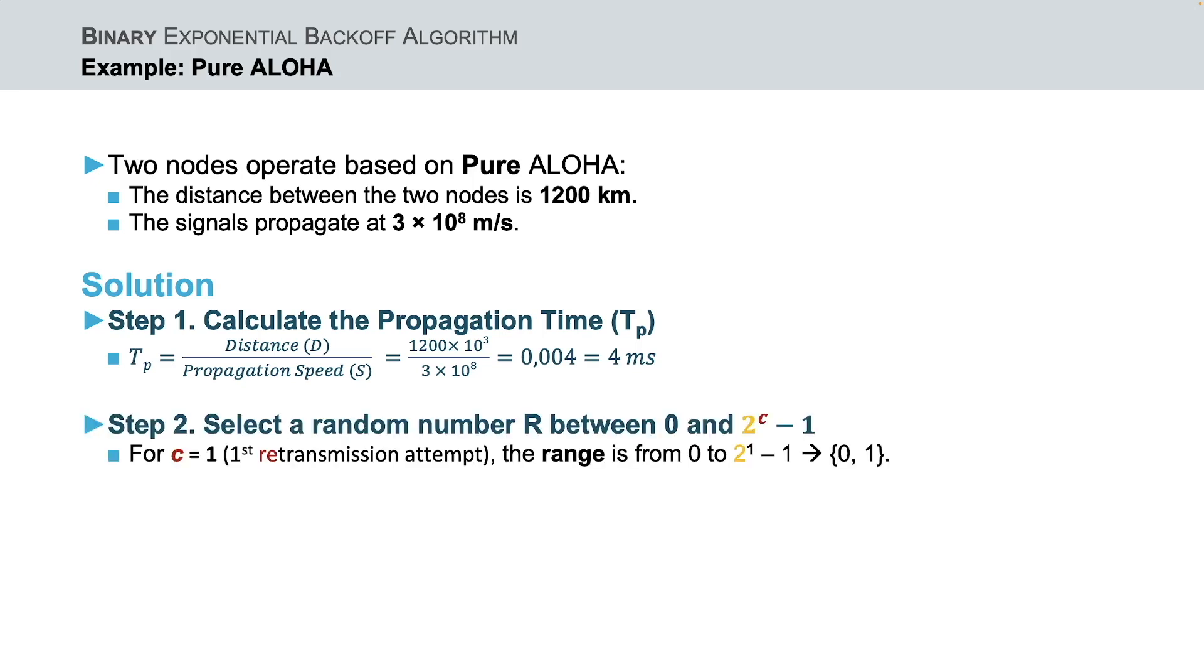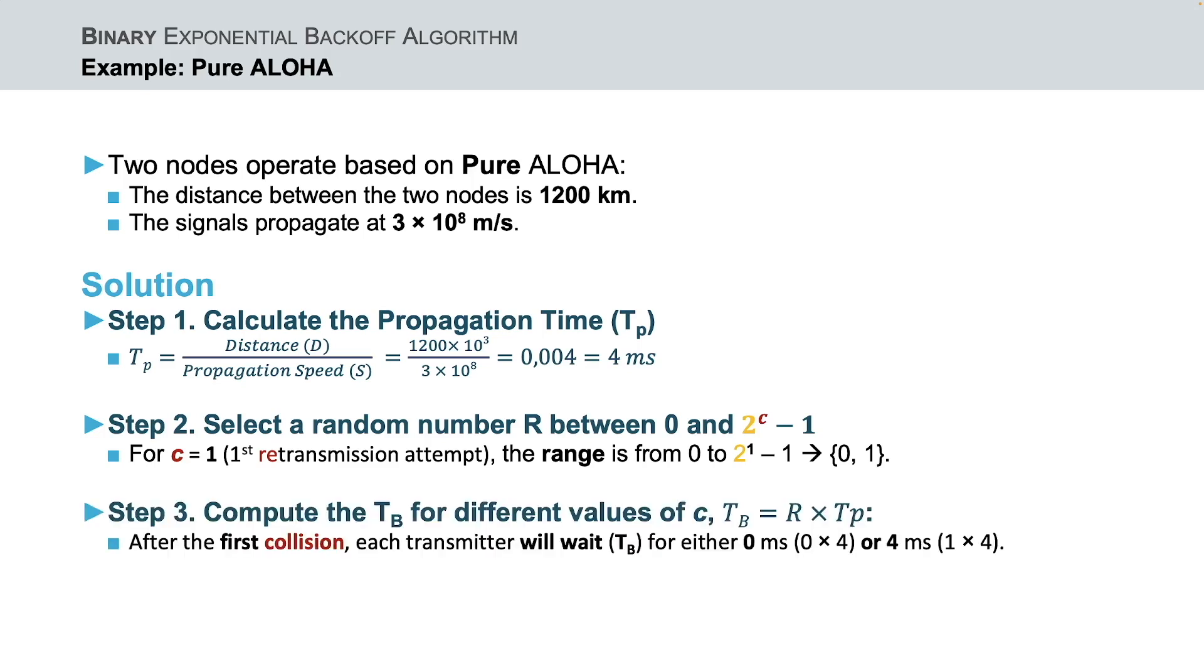In the second step, we select the random number r between 0 and 2 power of c minus 1. Thus, for the first retransmission attempt, where c is equal to 1, the possible values for r are either 0 or 1. Now that we have calculated the propagation time and defined the range of the random number r, we can compute the waiting backoff time t_b for different values of c. Based on the outcome of the random variable r after the first collision, each transmitter will wait for either 0 or 4ms.